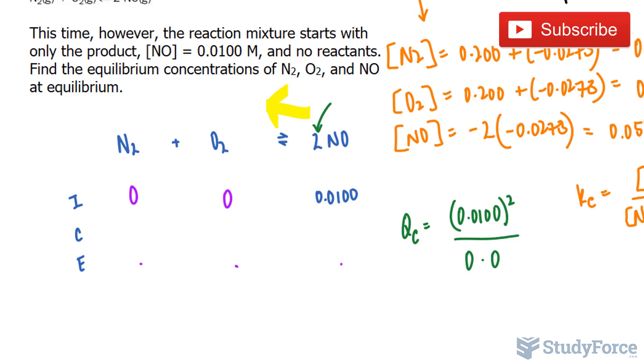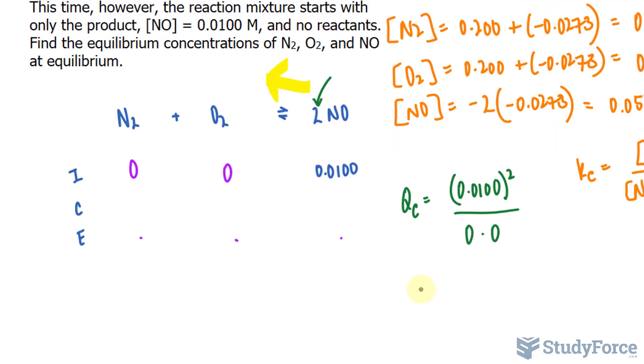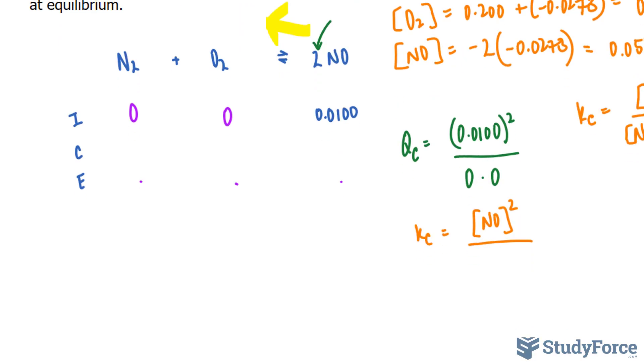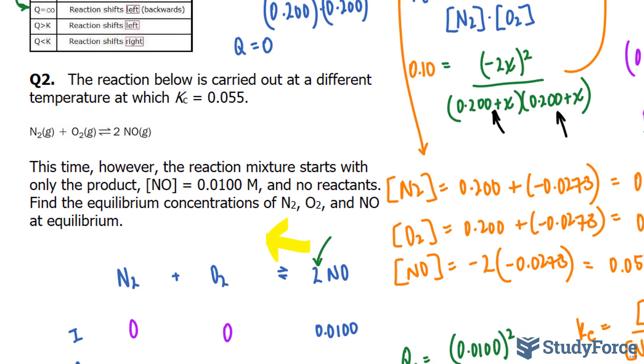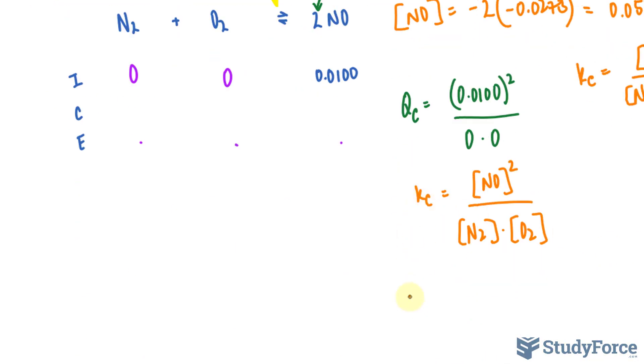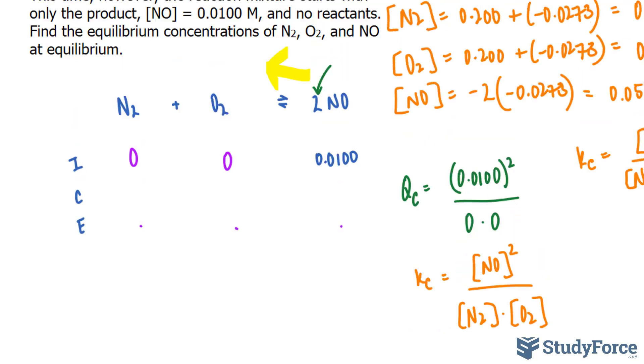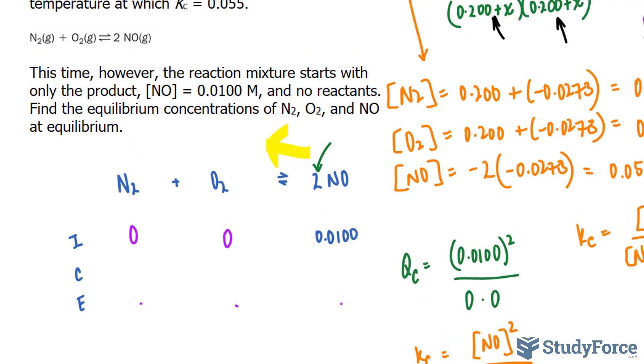The next step is to create the equilibrium expression. So, Kc is equal to the concentration of NO raised to the power of 2 over the concentration of the products, N2 times O2. And according to the question, Kc is 0.055, so I'm going to replace Kc with 0.055. Now what's interesting now is that we have absolutely no information about the equilibrium concentrations for any of these molecules.